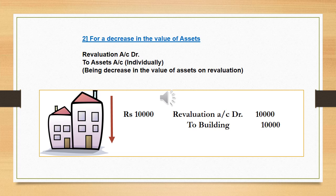Situation two: when there is a decrease in the value of an asset. A fall in the value of an asset will be termed as loss, so loss must be written on the debit side of revaluation account, and the asset account must be credited. Therefore the entry is: Revaluation Account debit, to Asset Account. For example, value of building falls by rupees 10,000. Entry is: Revaluation Account debit to Building Account by rupees 10,000.